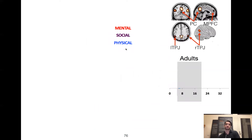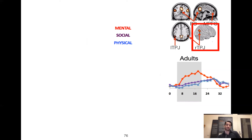Looking at the RTPJ, what you find in adults is that mental stories activate RTPJ the most, then social, then physical. The social and the physical are pretty close to one another — it really seems like the RTPJ is focusing and selecting on situations where there's a lot of emphasis on what people are specifically thinking about.